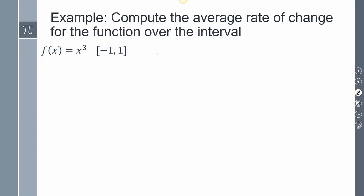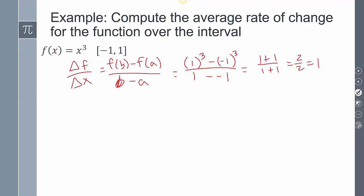For this first example, let's compute the average rate of change for this function over the interval. This is going to be Δf/Δx, which is the change in my function over the change in my x's, so b minus a. My f(b) is 1³ minus (-1)³ all over 1 minus (-1). Plugging that in, I'm going to get (1+1)/(1+1), which is 2/2, which is 1. My average rate of change is just going to be the slope of 1.